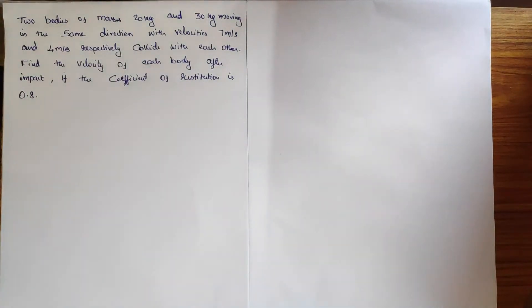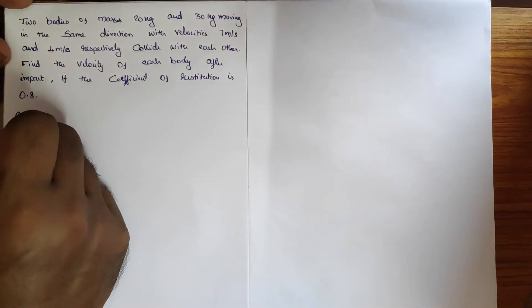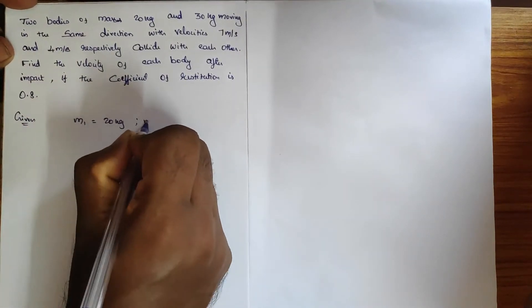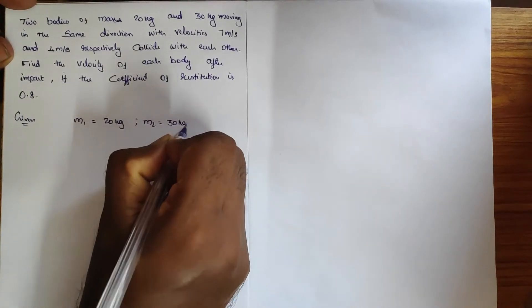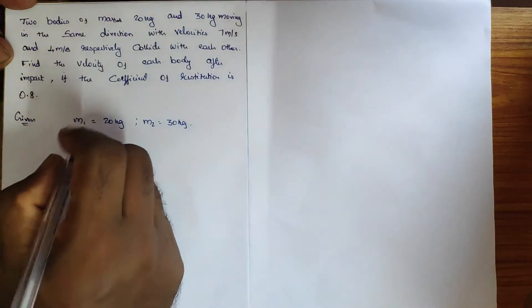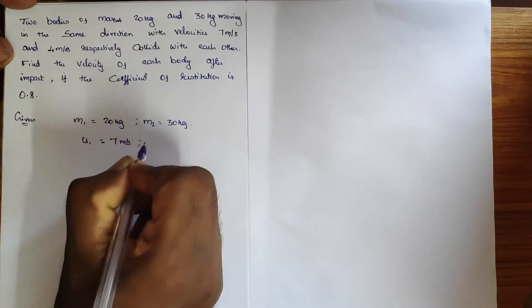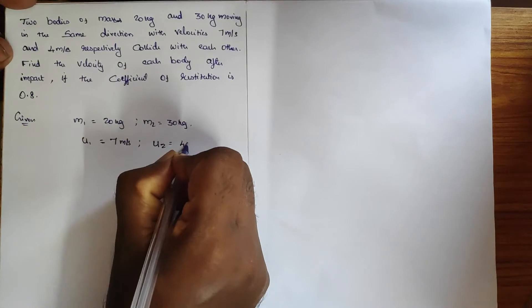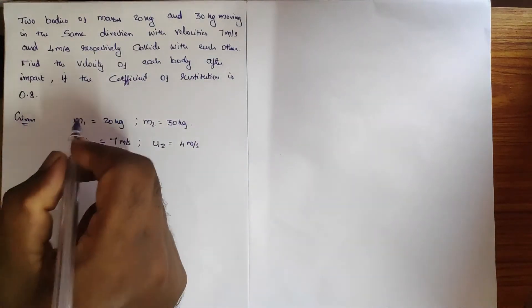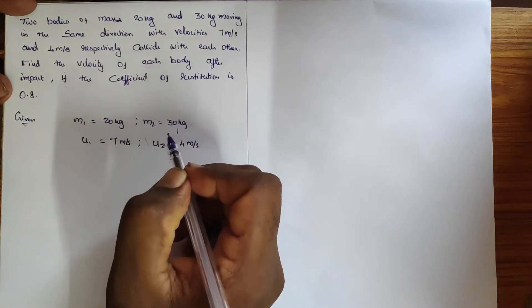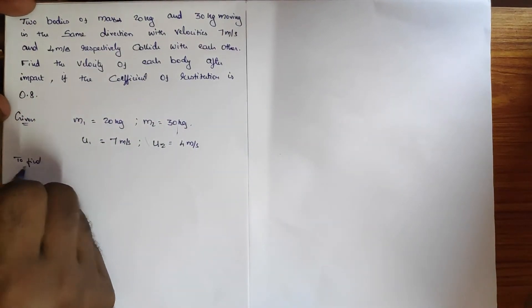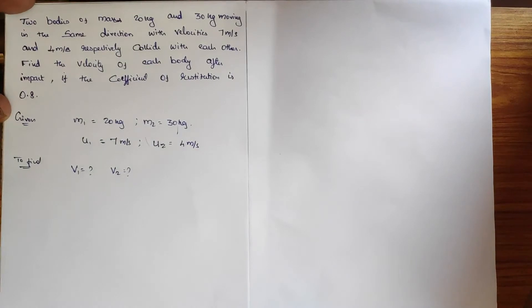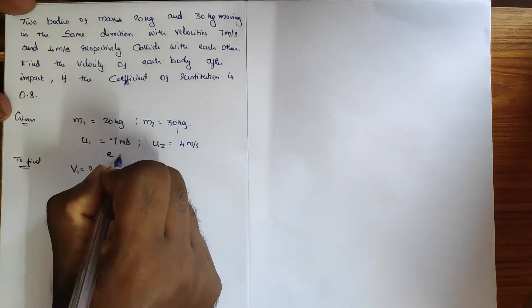Given: mass 1 m1 = 20 kg and mass 2 m2 = 30 kg, and u1 = 7 meter per second which is the initial velocity, and initial velocity u2 = 4 meter per second. This is for the first body and this is for the second body. To find the final velocity of both bodies, we need to identify it. The coefficient of restitution e = 0.8.